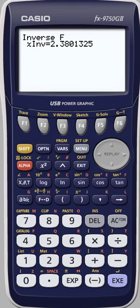And that's how we use the Casio graphing calculator to find the F critical value, or inverse F.